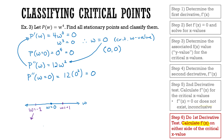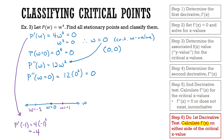Here at w = -1, I take my first derivative equation and calculate the slope. So p'(-1) = 4 times (-1) cubed, which gives me -4. This tells me that at this point I have a negative slope — in the region below w = 0, I have a negative slope.